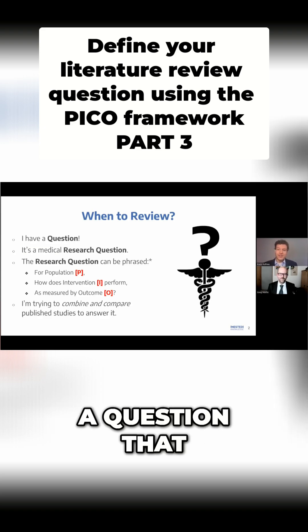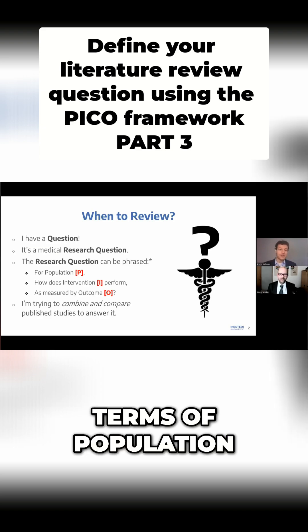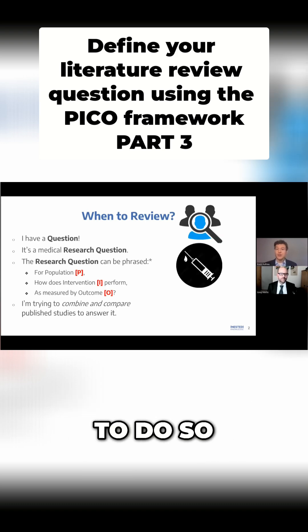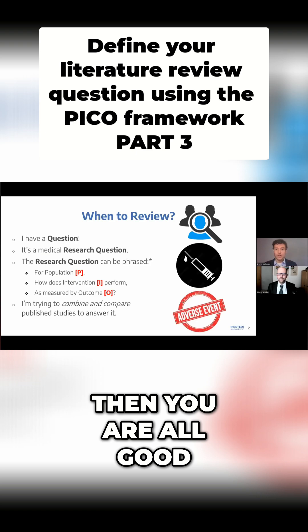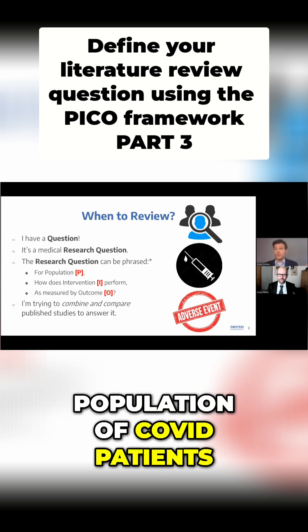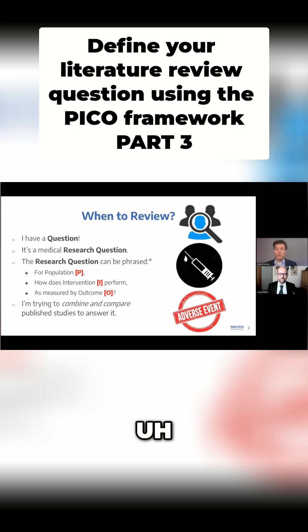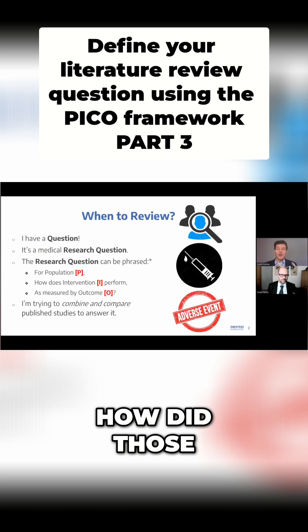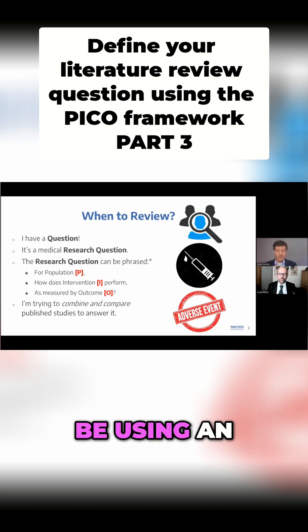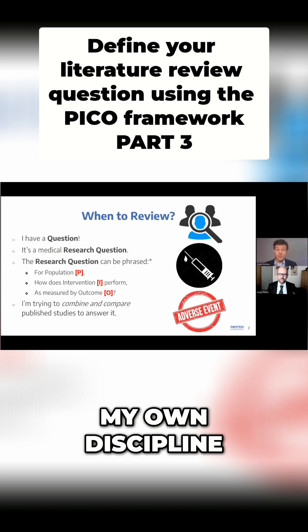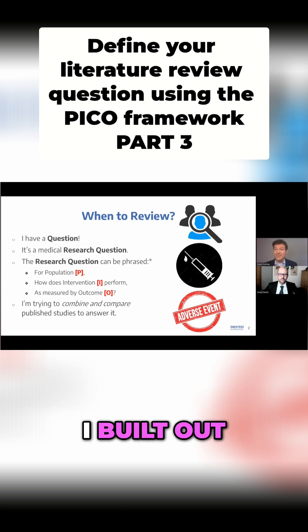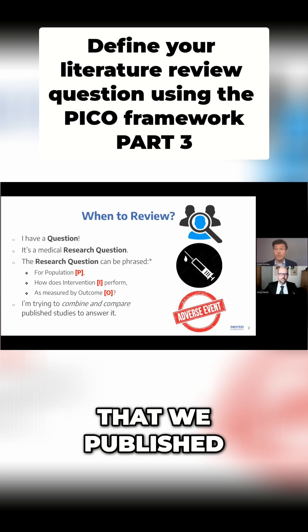Basically, if you have a question that can be framed in terms of population, interventions, and outcomes, and you're combining and comparing studies to do so, then you are all good. For instance, for a population of COVID patients, those who got vaccines — how did those vaccines perform with respect to adverse events? Though I'll actually be using an example from my own discipline for the rest of this, where we'll go over PICO and I'll show you exactly how I built out the PICO for a recent review that we published.